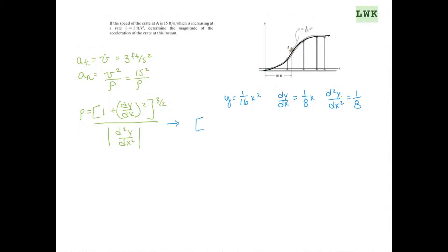So we'll have 1 plus 1 over 8, x squared to the 3/2 power, divided by the absolute value of 1 over 8 at x equals 10 feet, which we see right here. And that will work out to give us a rho value of 32.8 feet equals rho.